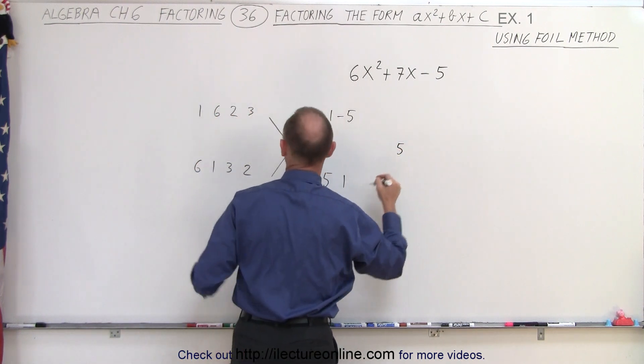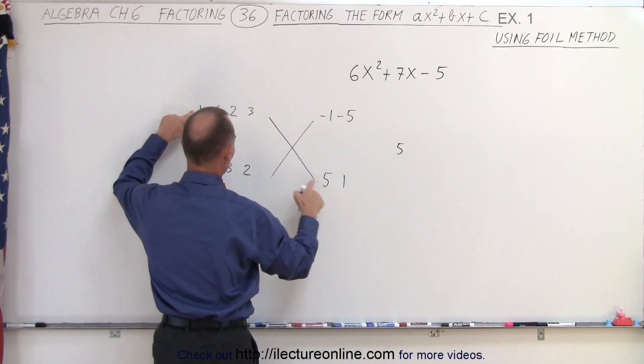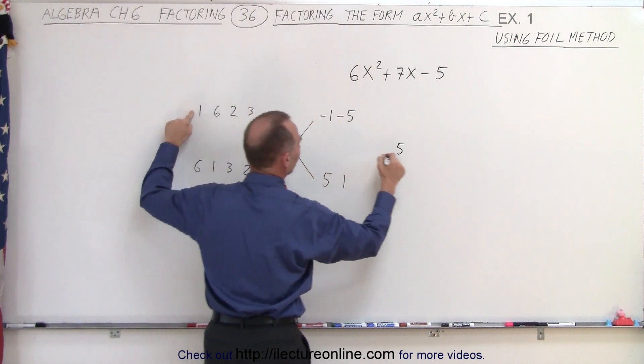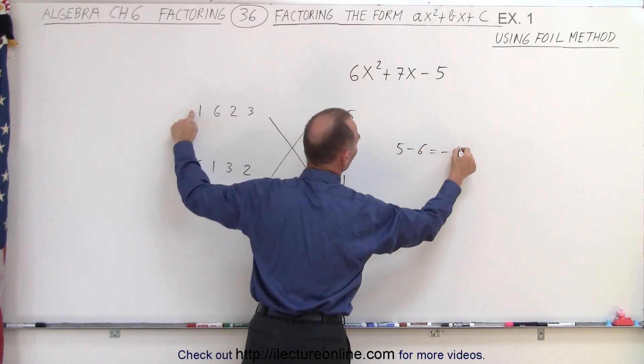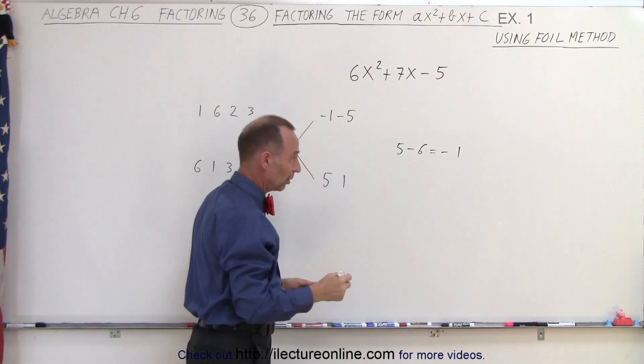So 1 times 5 is 5, and we add to that 6 times negative 1, which is negative 6, and of course that's negative 1, which is not 7, so that doesn't work.